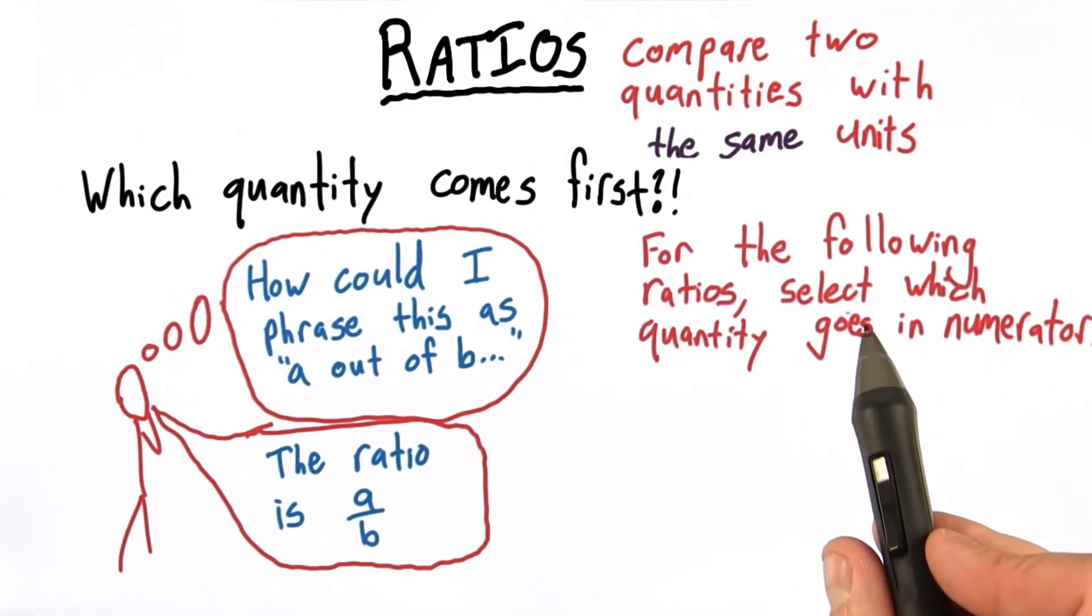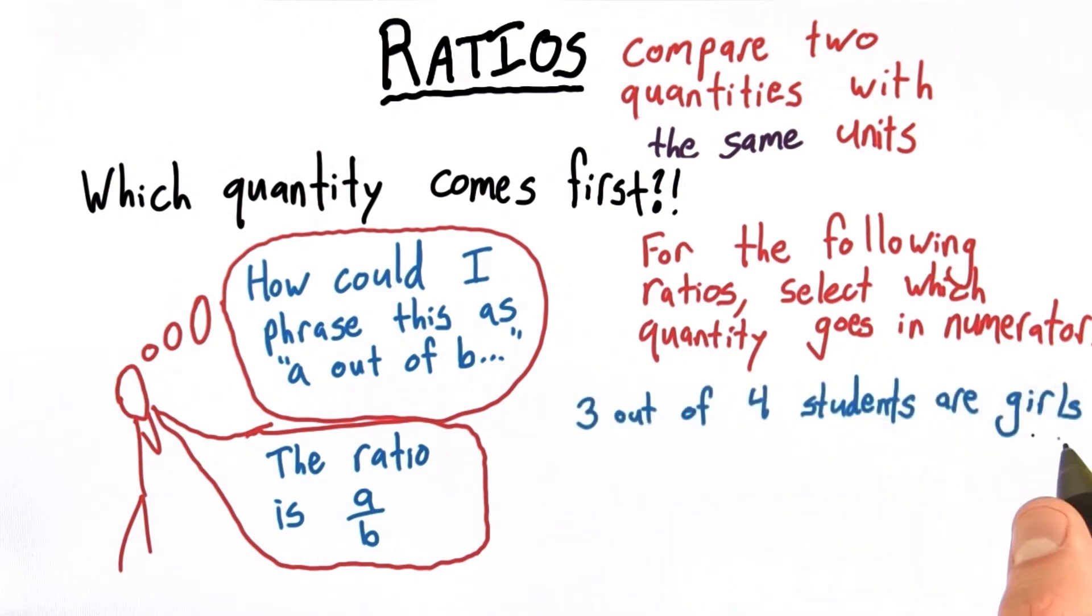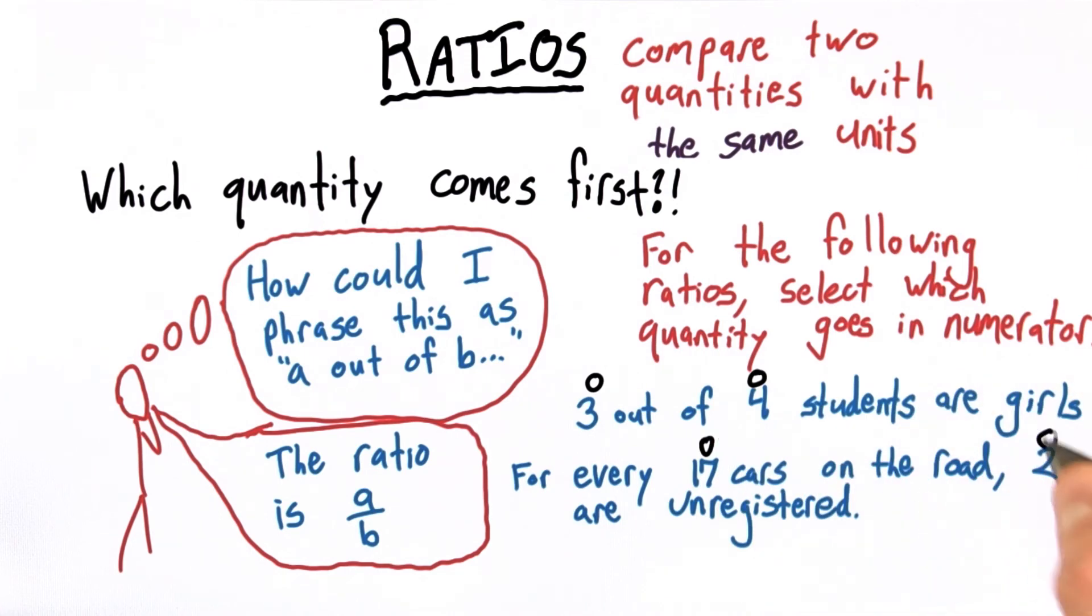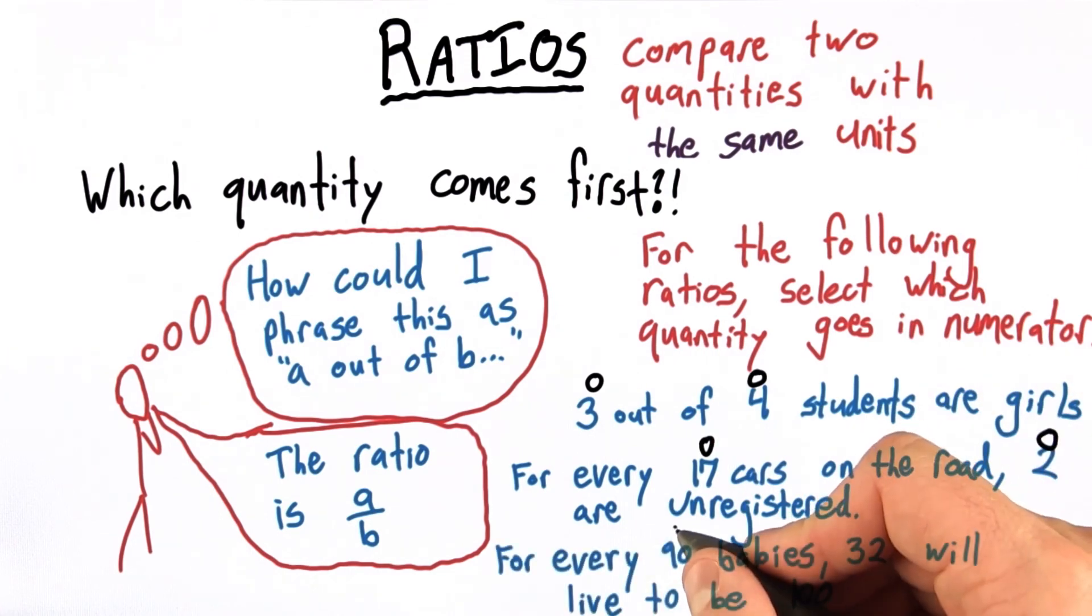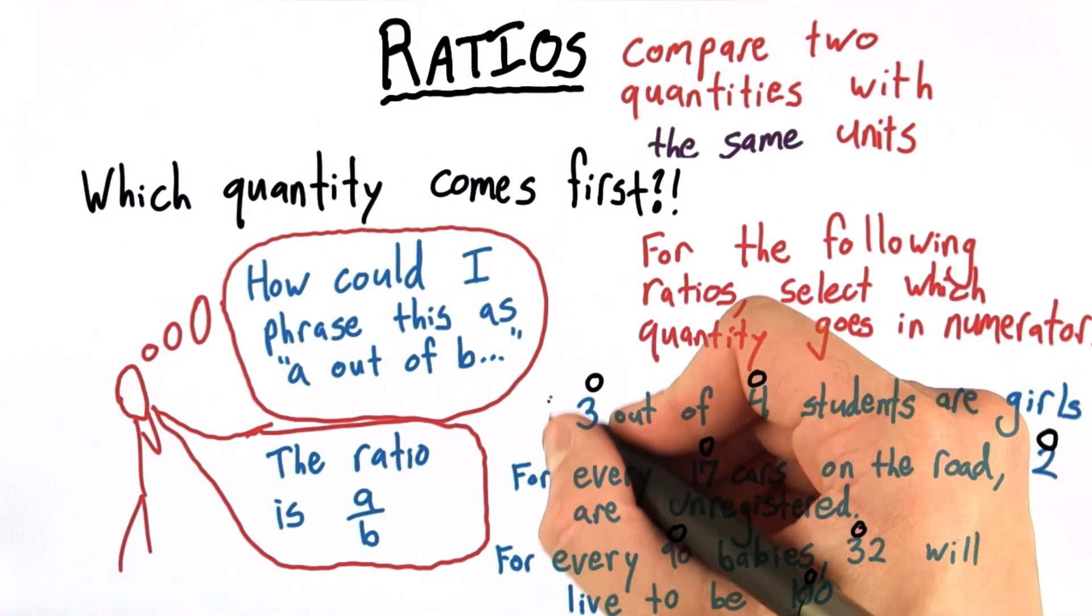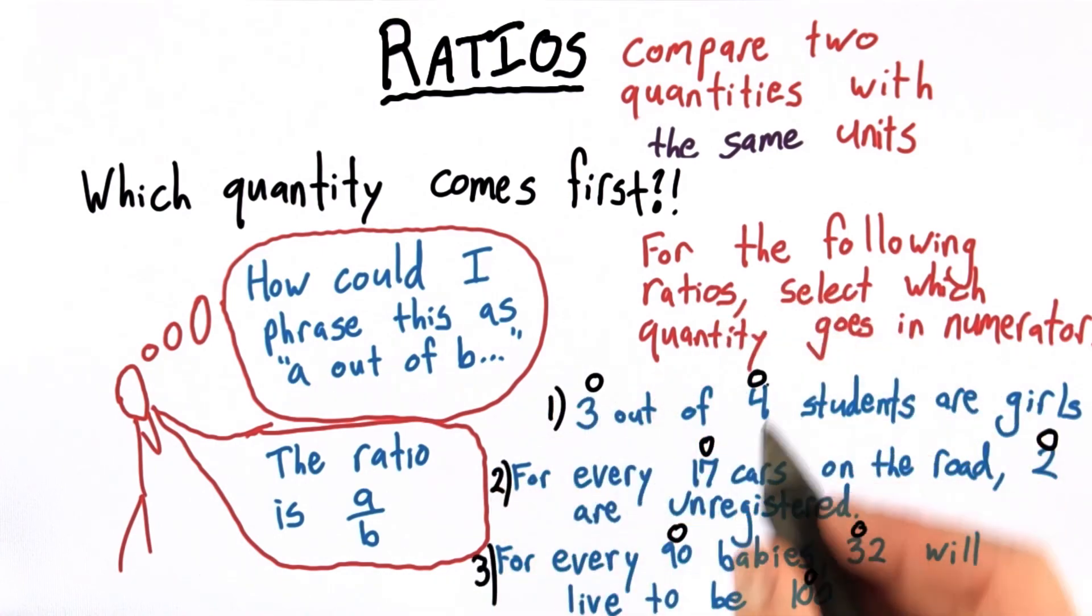So for the following ratios, select which quantity goes in the numerator. 3 out of 4 students are girls. For every 17 cars on the road, 2 are unregistered. And for every 90 babies, 32 will live to be 100. For each of these three statements, select the appropriate button for the quantity that belongs in the numerator.